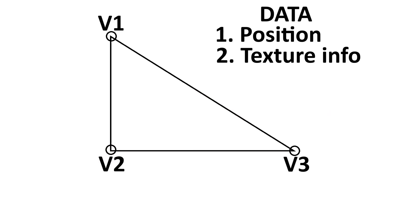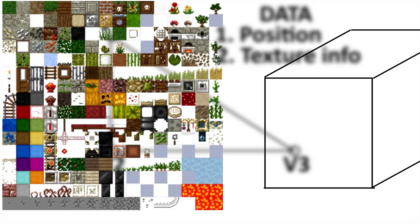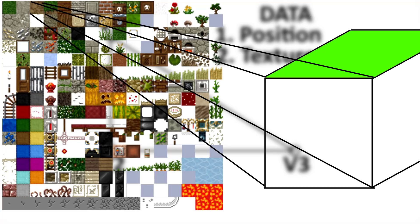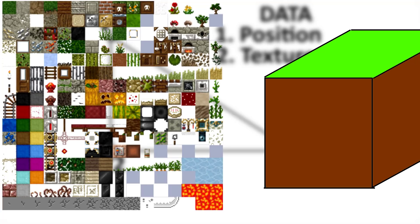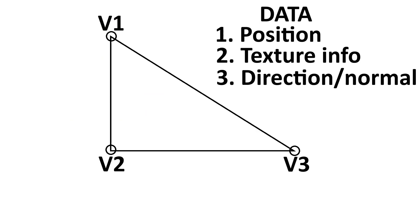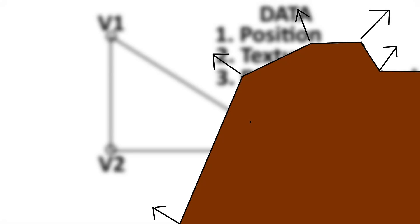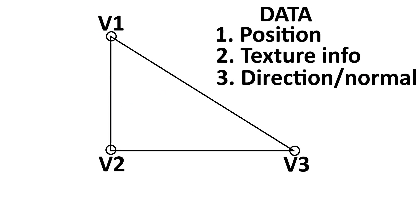There are also the texture coordinates, which tell OpenGL which part of a texture should be used to render that part of the triangle. And the vertex normal, which is sort of the direction that vertex is facing, and is used for lighting calculations.